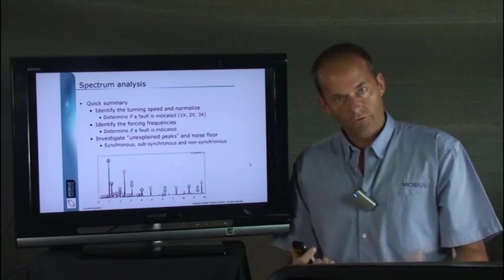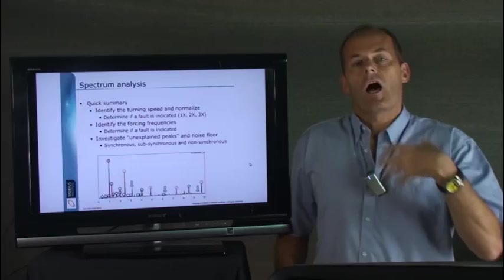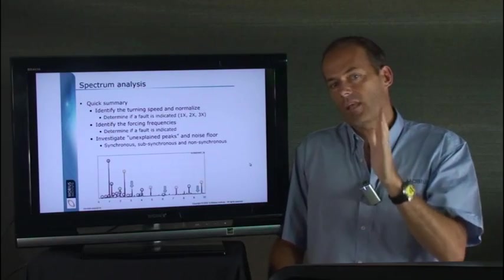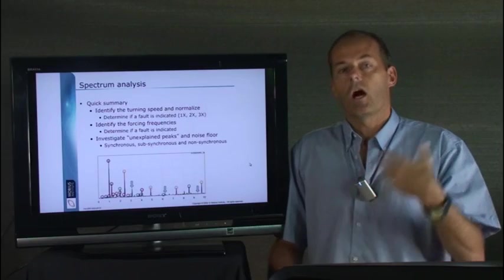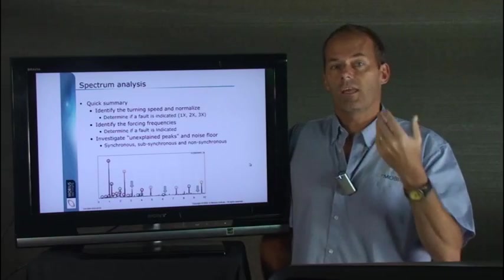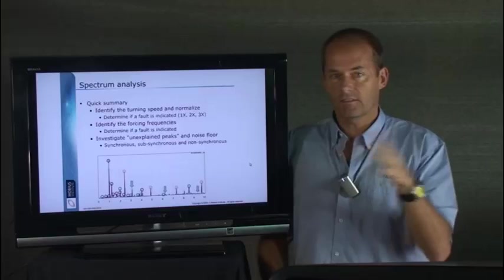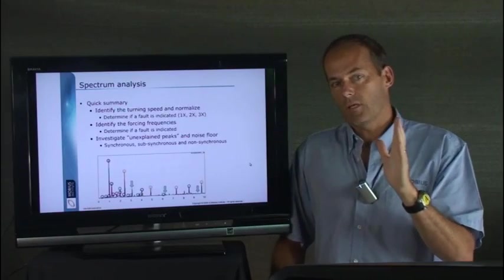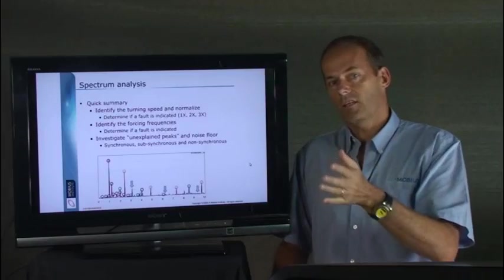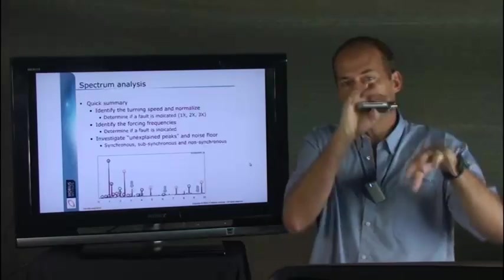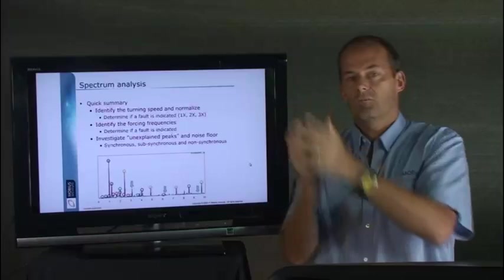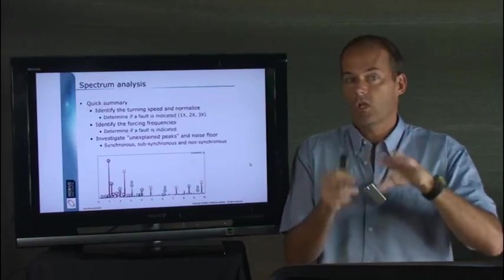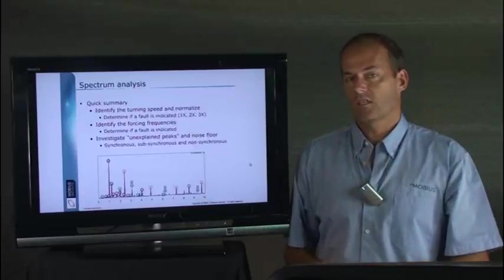Very briefly, the process is, after you've verified that the data is okay, you're going to identify the 1x peak in the spectrum. And I would always argue to look at the spectra order normalized with the x-axis in orders rather than Hertz or CPM. Then I can look at the amplitude of the 1x peak and 2x and 3x and even 4x and 5x. And depending on how they all look, that will send me off in one direction.